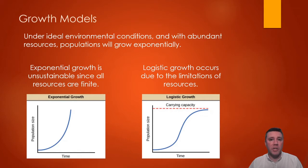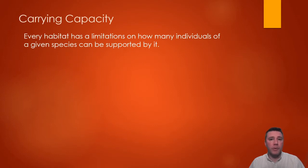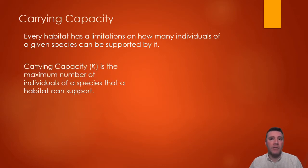This is represented by the logistic growth model and incorporates the concept of carrying capacity. Every habitat, regardless of location or size, has limitations on how many individuals can be supported by it. Carrying capacity is determined by resource availability as well as things like weather events and seasonal changes, meaning it is not a fixed value but changes as environmental conditions change. For example, a drought can severely and indefinitely limit carrying capacity until normal precipitation patterns return. The symbol used to represent carrying capacity, italicized capital K, is by definition the maximum number of individuals of a species that a habitat can support.